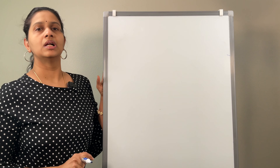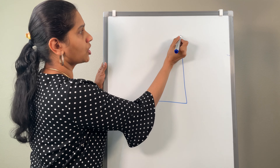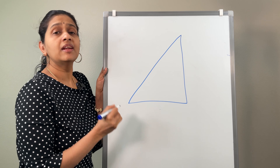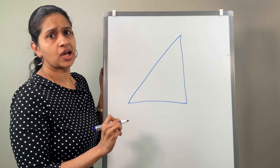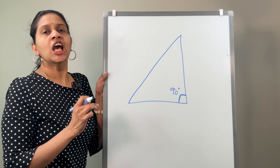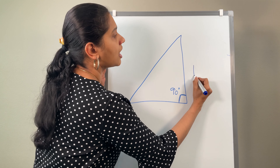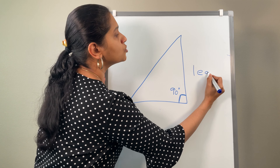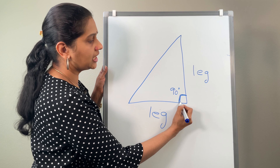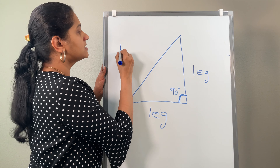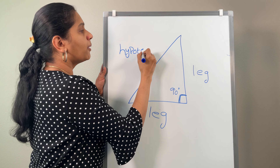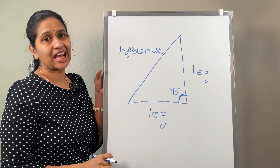Now consider the right triangle in another form. Suppose you are going to draw a right triangle like this — then which is the hypotenuse and which are the legs? The side which makes the small box is going to be the 90-degree right angle. These two sides are going to be the legs, and the side opposite to this 90 degrees — the longest side — is going to be the hypotenuse in this type of right triangle.